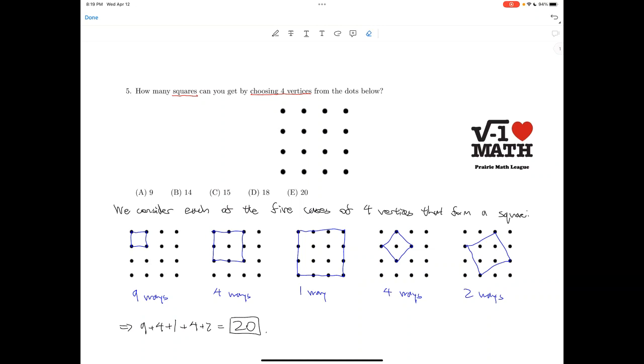So for the first case, we have a 1 by 1 square as shown here. And now there are 9 ways to do so: 1, 2, 3, 4, 5, 6, 7, 8, 9. So 9 ways.